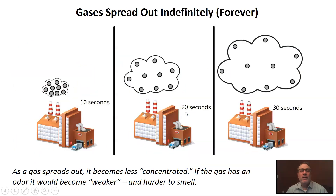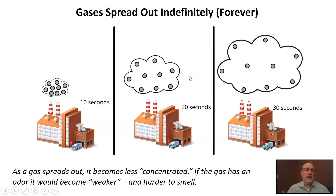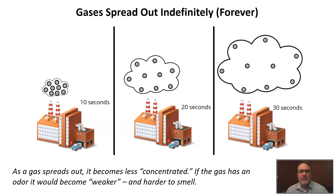We have not talked about this idea yet — what happens when gases are not in a container? This drawing shows us what happens over time. As a gas spreads out it becomes less concentrated. With no container, at 10 seconds the gas particles are going to be pretty close together in a small space. At 20 seconds those particles are going to get farther apart, and at 30 seconds even further apart. So as time moves on, gases without a container become less concentrated.